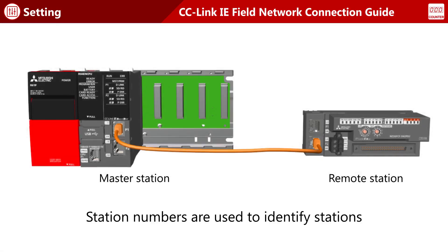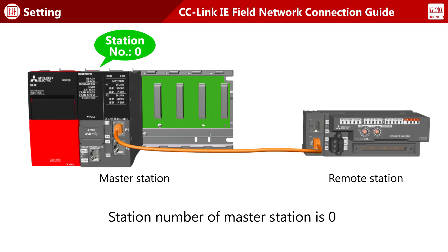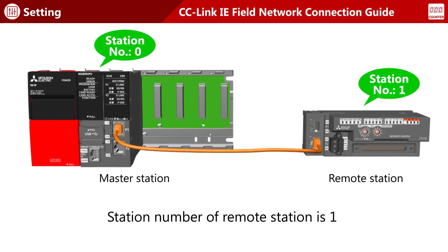Just as individual telephones are assigned telephone numbers for identification, station numbers are used to identify stations. The system shown here is configured with two stations. The station number of the master station is always fixed to zero. For the remote station, set the station number to one.